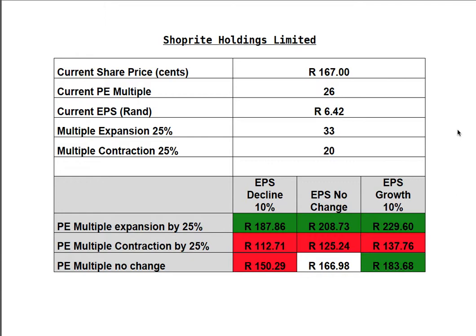The price-to-earnings multiple provides you with an idea about what the market is willing to pay for future earnings on a stock. The first thing I did was to calculate a multiple expansion of the price-to-earnings multiple by 25% and then a contraction on the multiple by 25%. So the current price-to-earnings multiple is 26; expansion by 25% would be about 33, and contraction by 25% would be about 20.